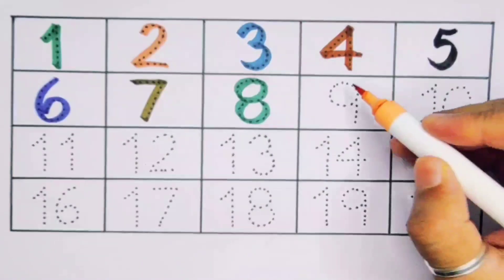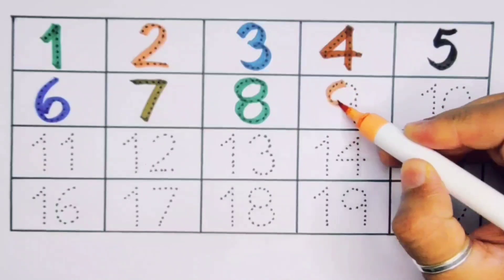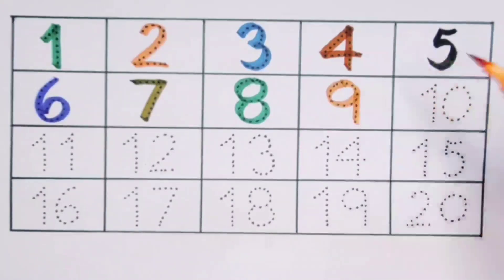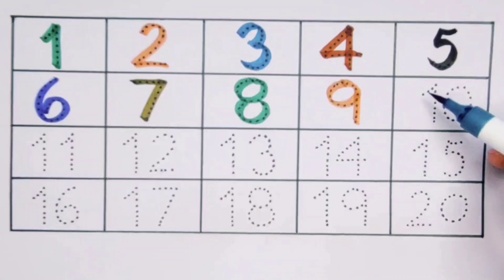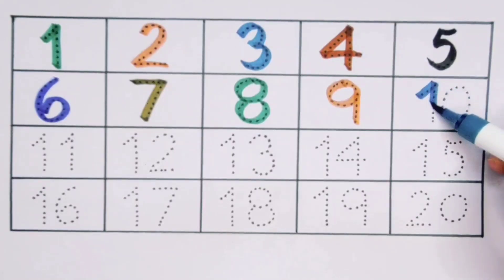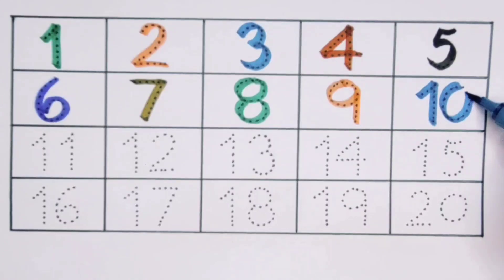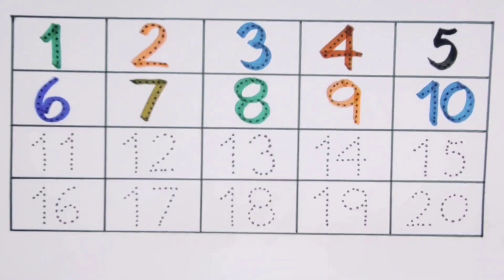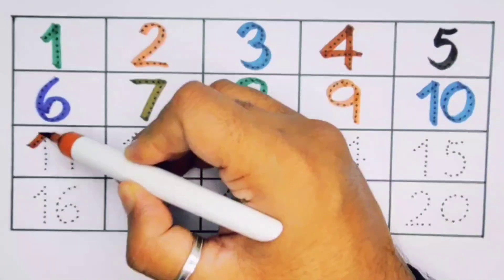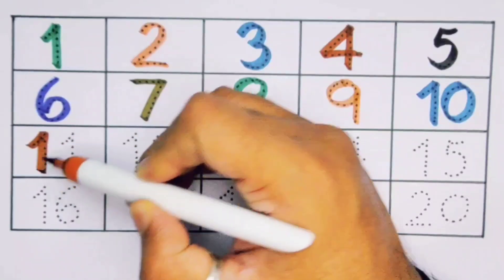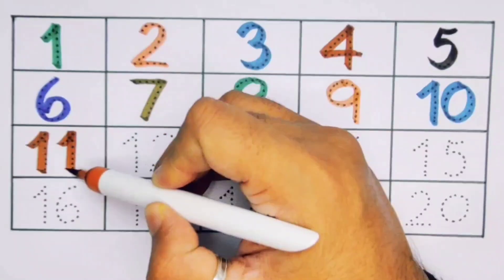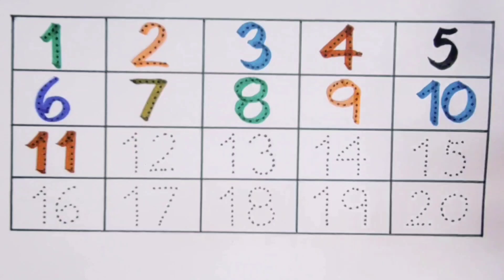Next, it's 9, number 9. Next, 10, one-zero, number 10. Next, 11, one-one, number 11.